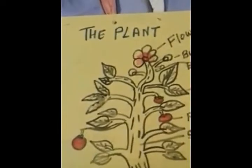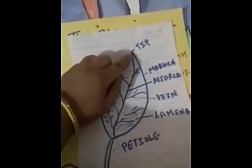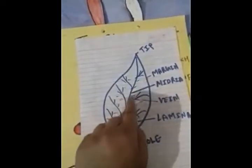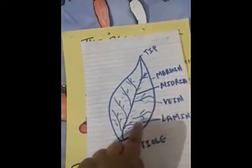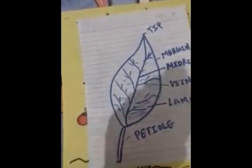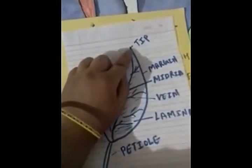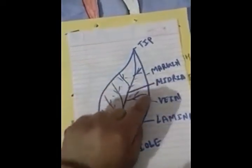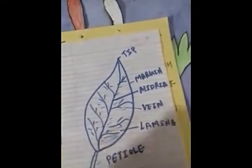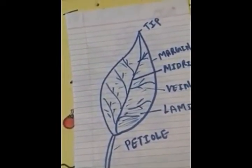Now we will see our next topic: the structure of the leaf and the function of the leaf. I have drawn this for you. The upper part is called the tip, and these are the margin. This is the midrib, and these are the veins. This flat surface part is called the lamina. The stalk from where the leaf is attached to the plant is called the petiole. The color of the leaf is green because of the presence of chlorophyll.